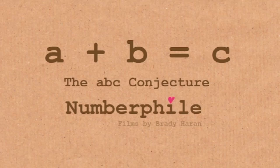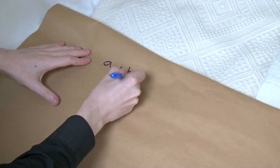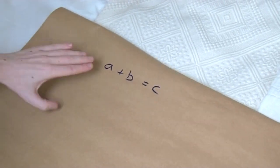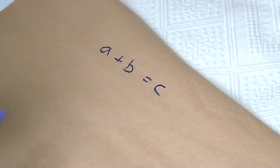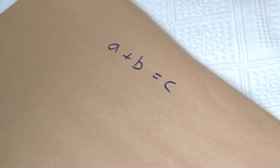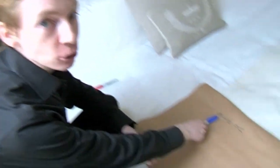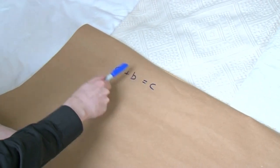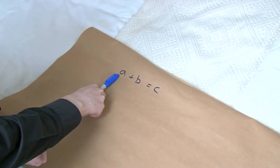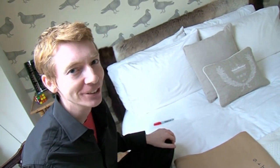So the ABC conjecture involves the most simple formula you can think of. It's this: A plus B equals C. Doesn't get much easier than that, and that's where it gets its name from. The rules are these are whole numbers, and they don't share any factors. So that means if I can divide A by 2, then I'm not allowed to divide B by 2. Or if I could divide A by 3, then B is not allowed to be divisible by 3. They're not allowed to share any factors like that.